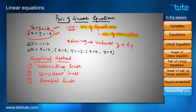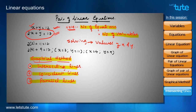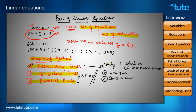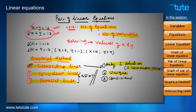In the graphical method, we get three types of cases: intersecting lines, coincident lines, and parallel lines. The mango-apple problem was a case of intersecting lines. For intersecting lines, we always get exactly one solution — the point of intersection — which is also called the common point. This solution is unique, and the linear equations for which we get a solution are called consistent linear equations.